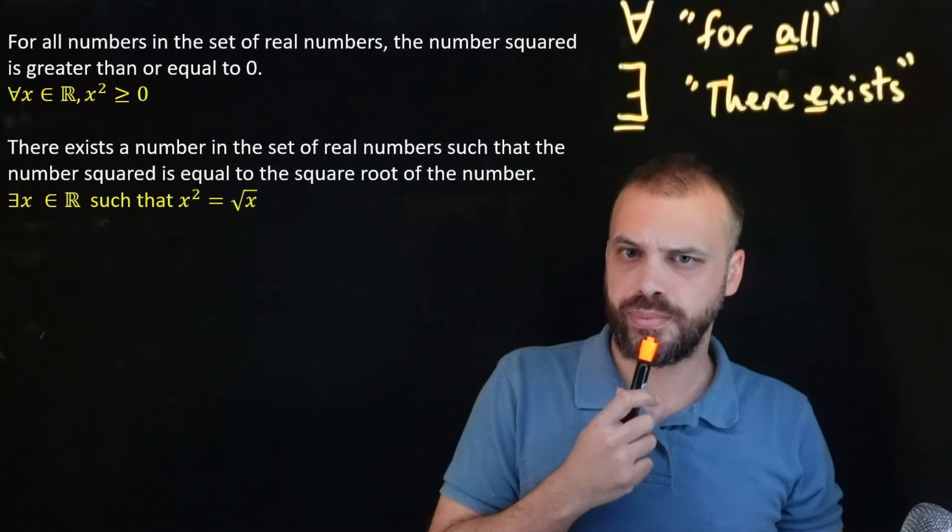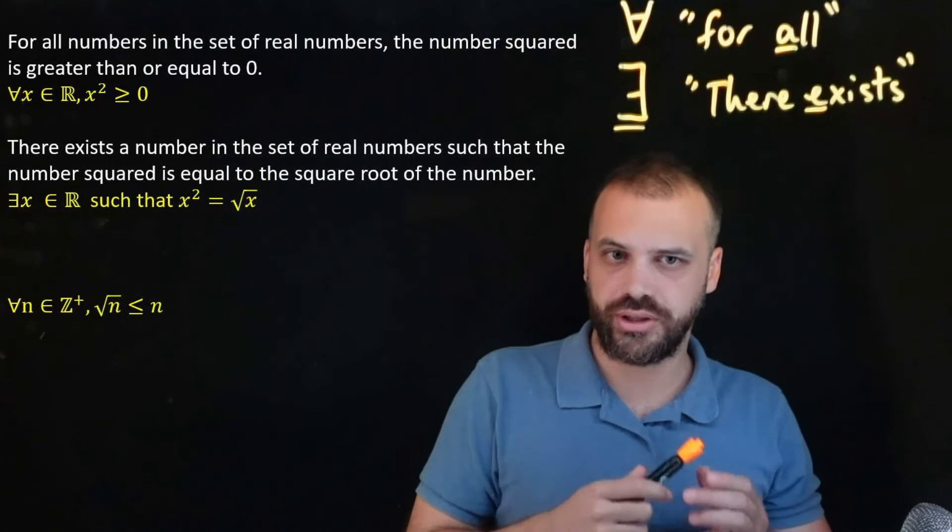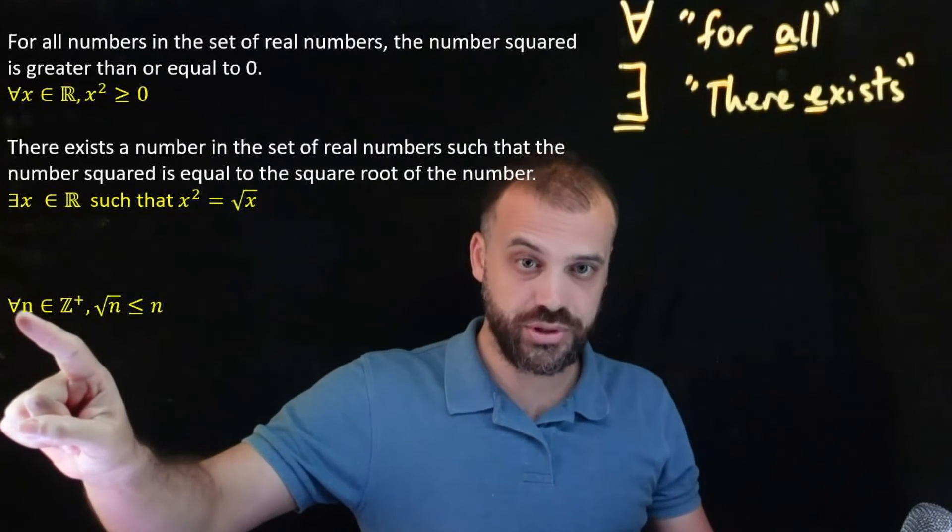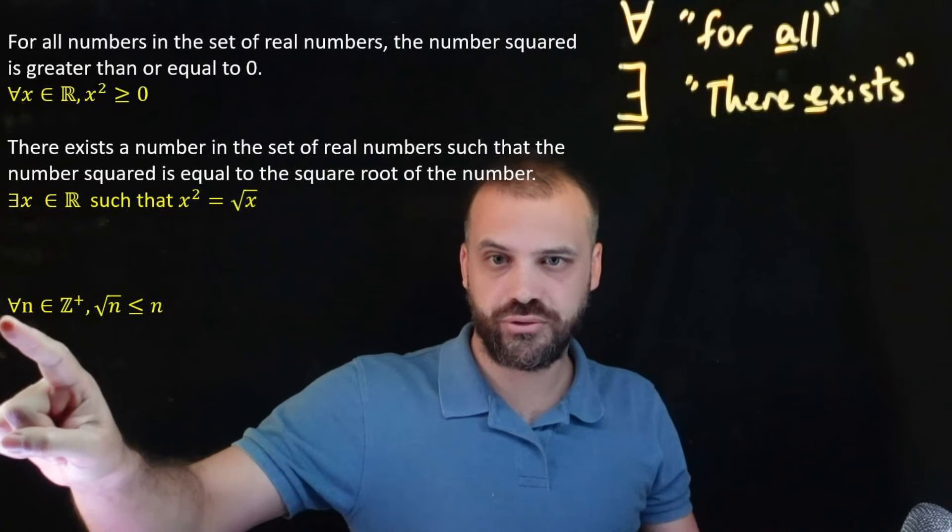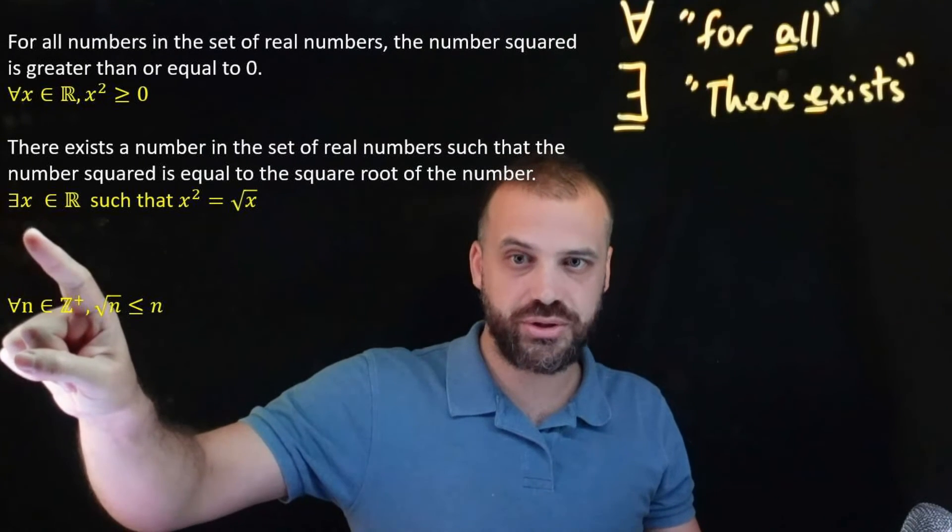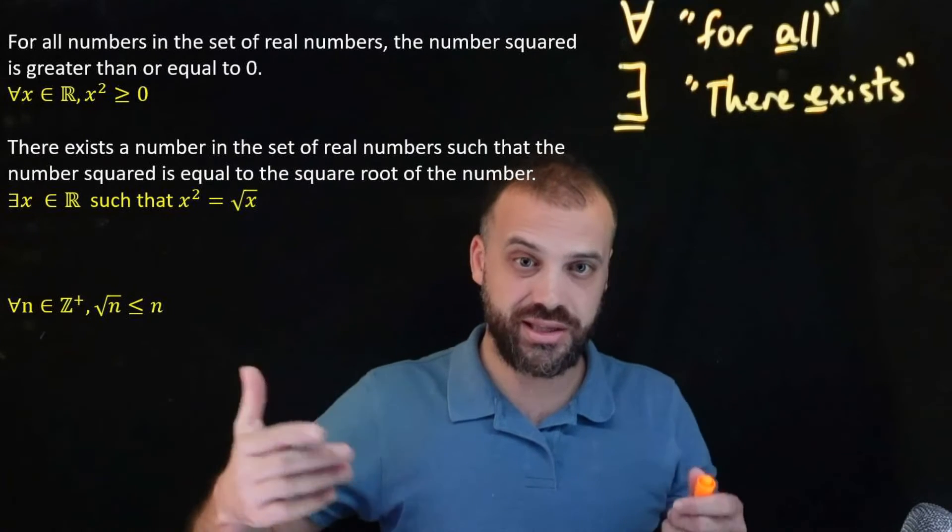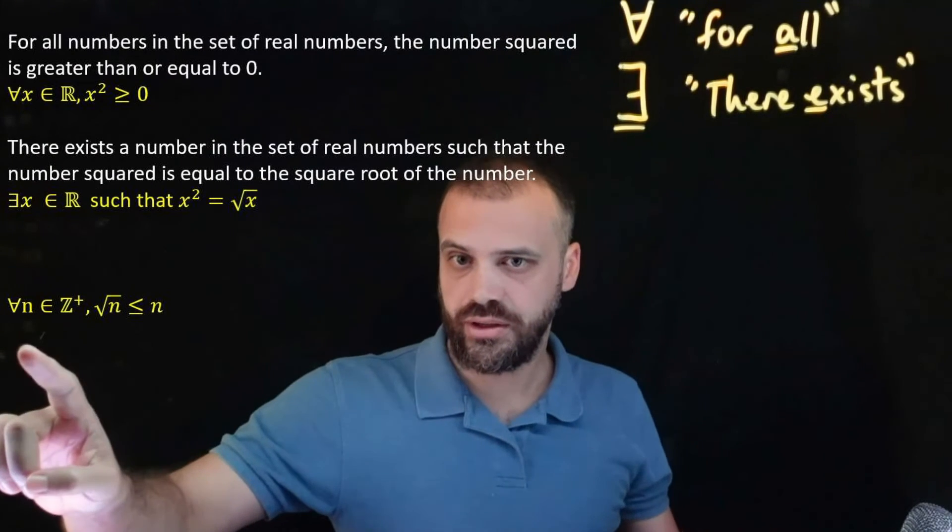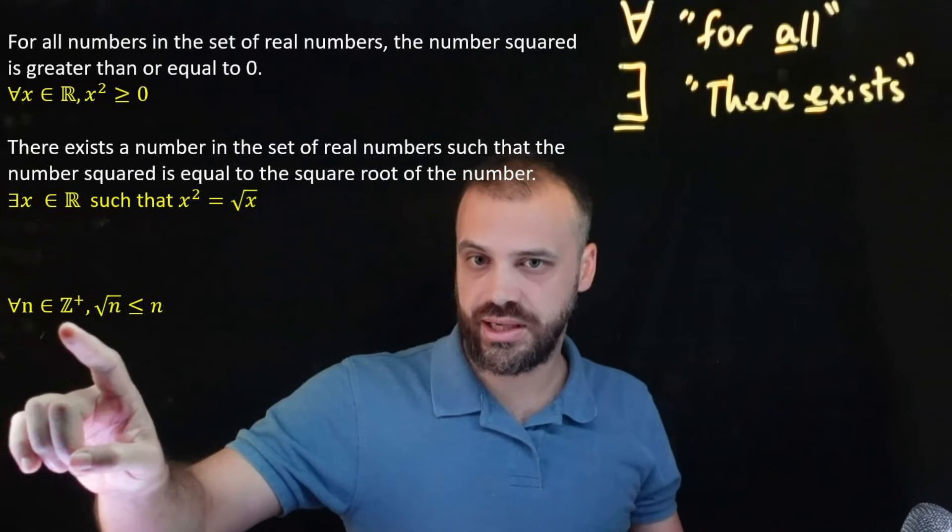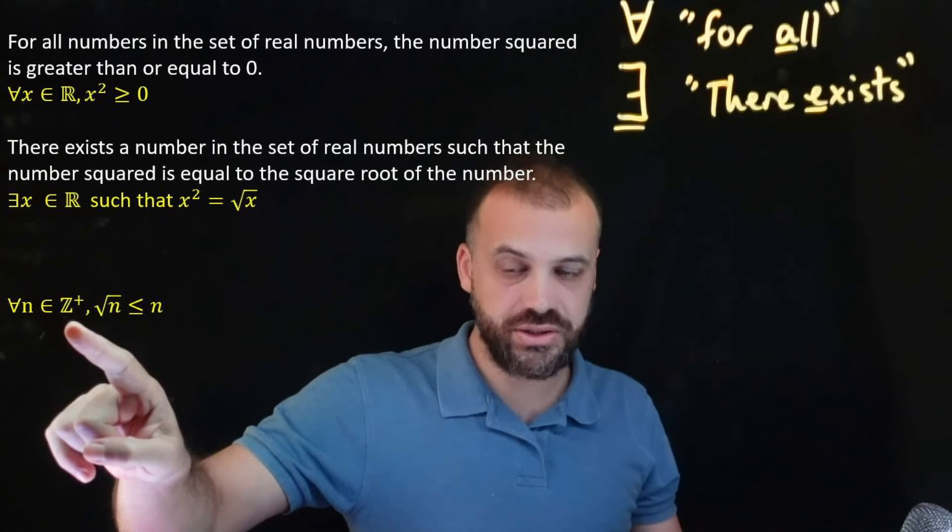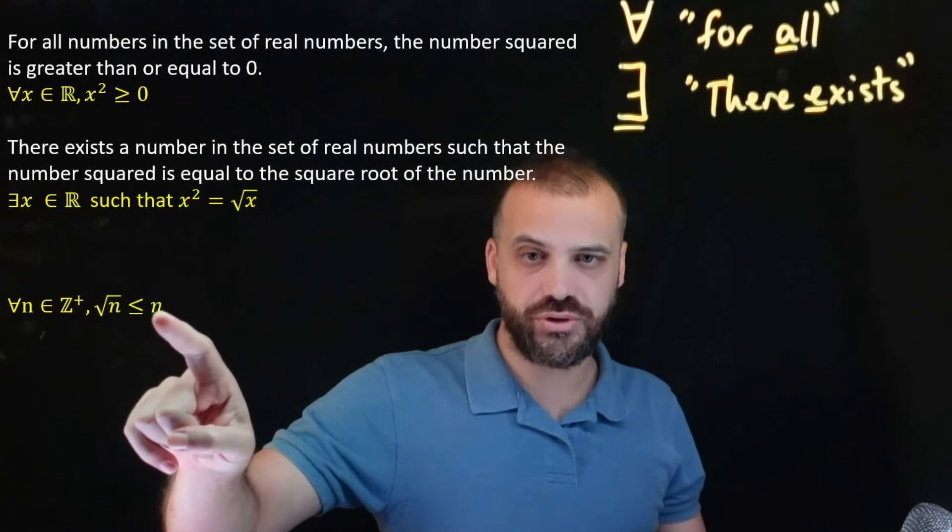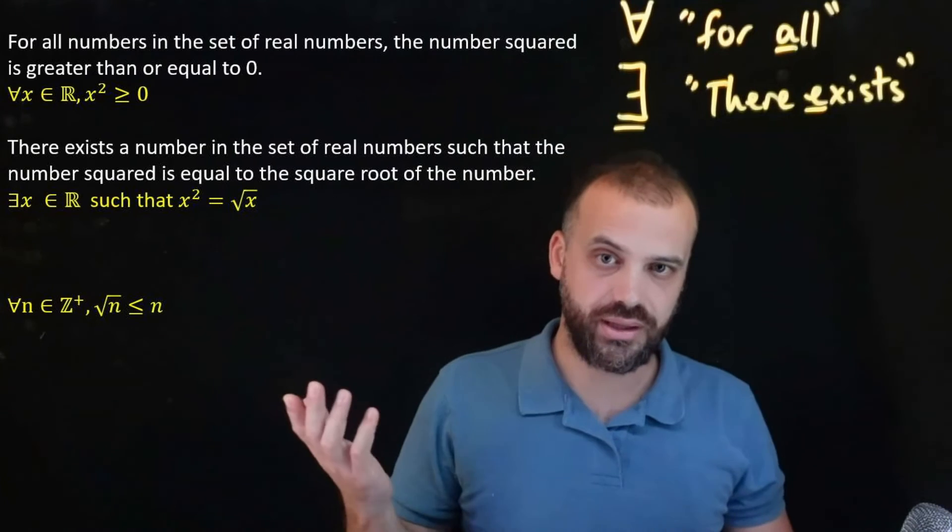So that's what that says. Another one. What does this say? Pause it, try it. For all numbers - now I've been using x's so far but we can use n's, p's, q's, doesn't matter - for all numbers in the set of positive integers, the square root of n is less than n.